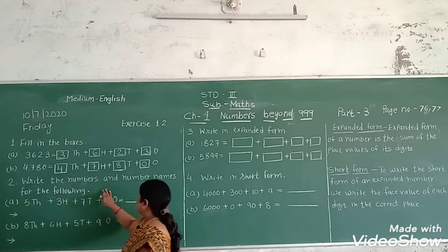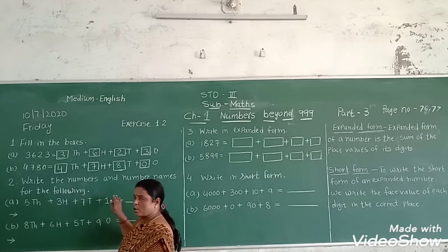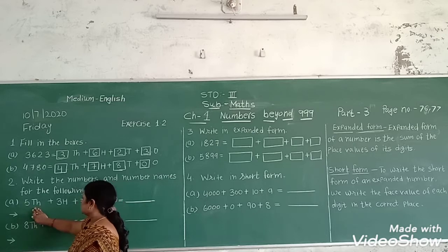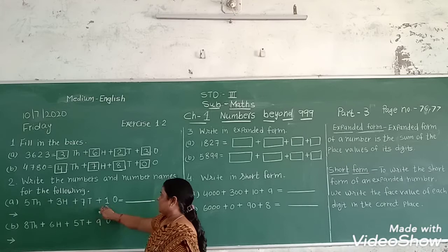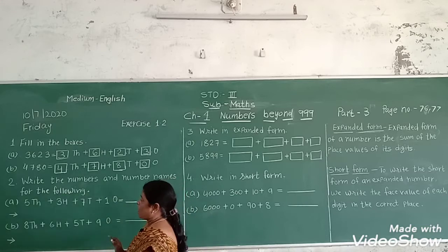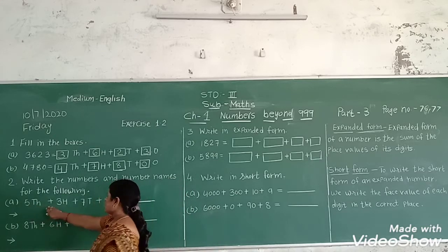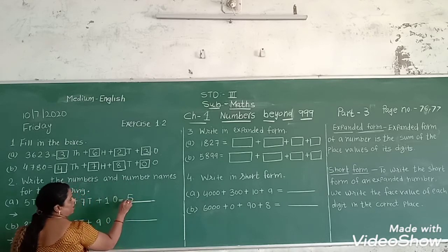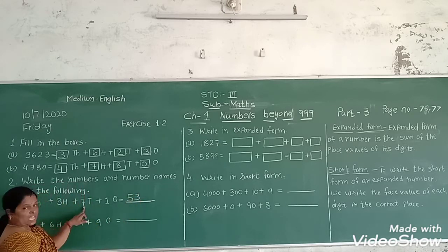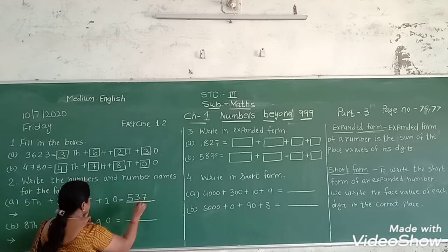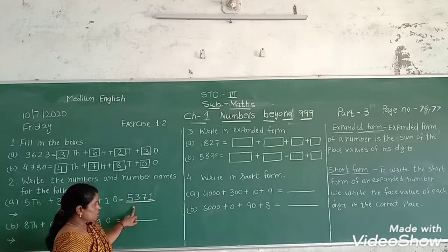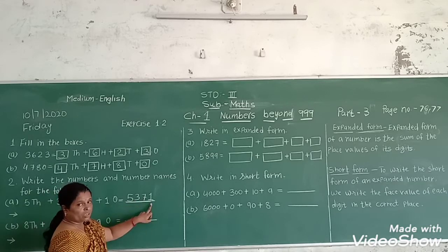Write the numbers and number names for the following: five thousand, three hundred, seven tens, and one. First we write the number. How to make the number? Five thousand — write five. Three hundred — write three. Seven tens and one. The number is five thousand, three hundred, seventy-one.